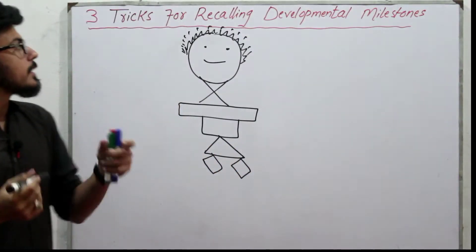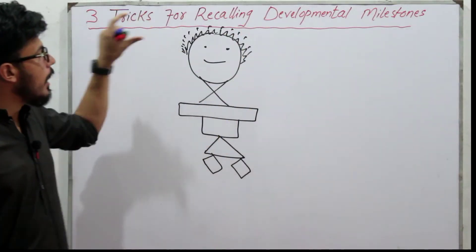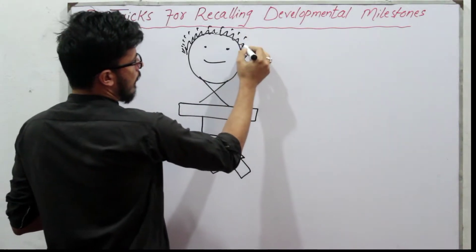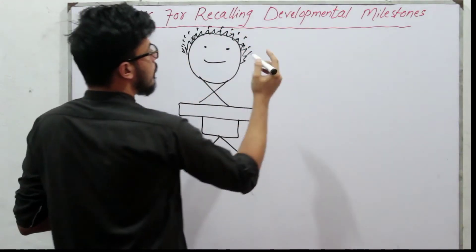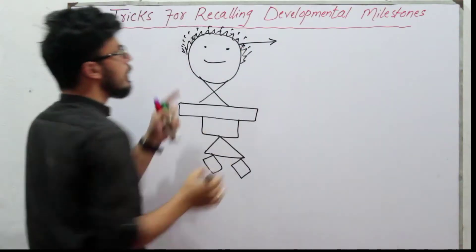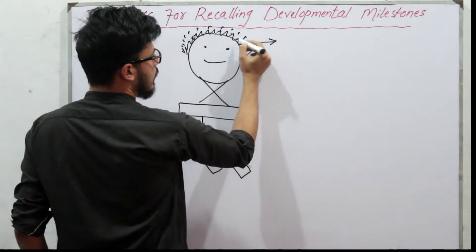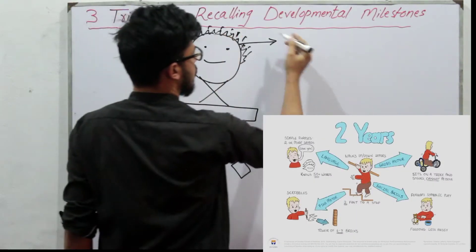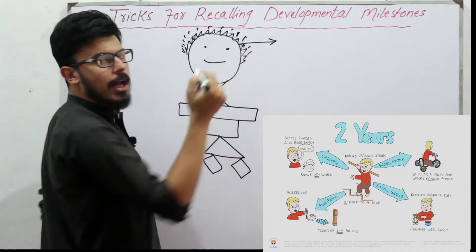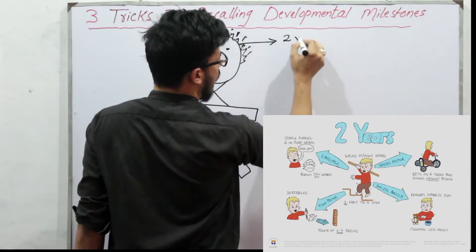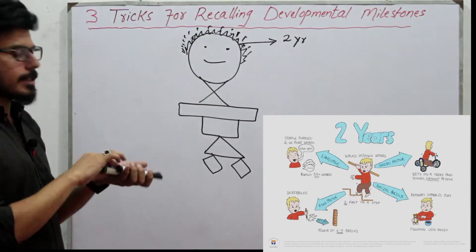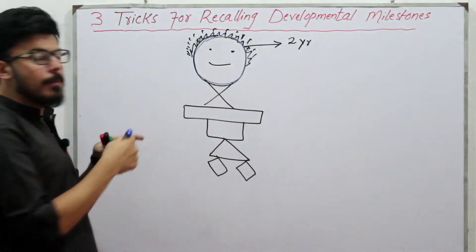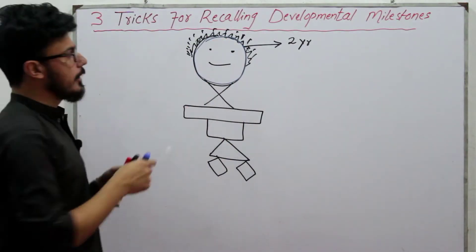In order to recall the developmental milestones, you need to recall the sketch. Now, a normal child can draw a line or scribble at two years of age. Just focus on this area — this is a circle — so a normal child can draw a circle at three years of age.